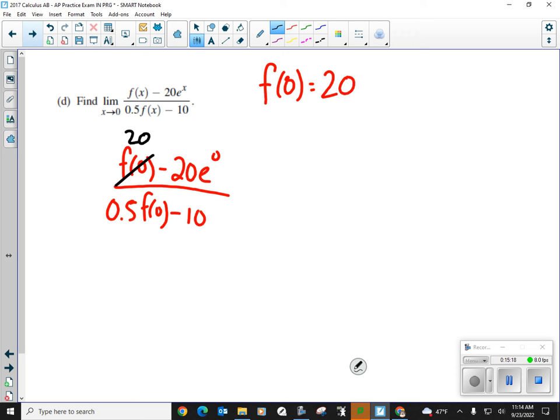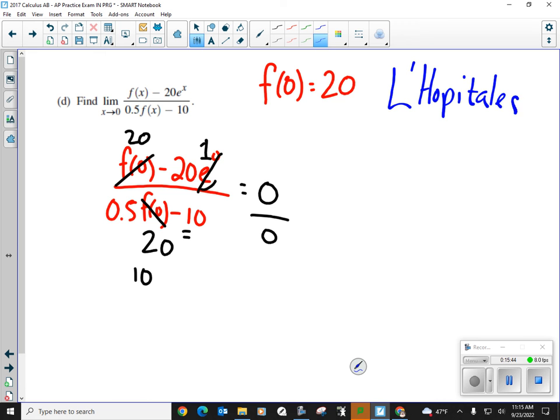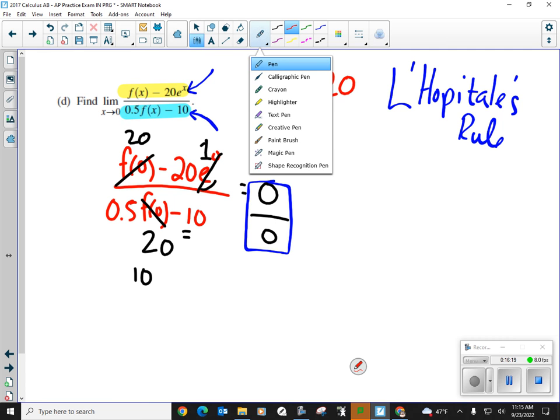f to the 0 is 20, okay? Anything to the power of 0 is 1. So that's 20 minus 20 on top would give me 0. And half, okay, f of 0 again is 20. Half of 20 is 10. 10 minus 10 is 0 over 0. This is a perfect situation where we use something that we call L'Hôpital's rule. And what that states is, if you have a limit and you end up with 0 over 0, you can take the derivative of the top and the derivative of the bottom separately. Do not take the derivative of the expression. You are not using the quotient rule. Let me state that. You are not using the quotient rule. We're taking the derivative of the top separately and still putting it over the derivative of the bottom.